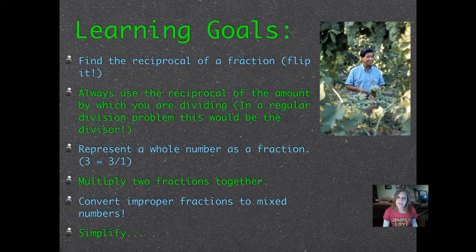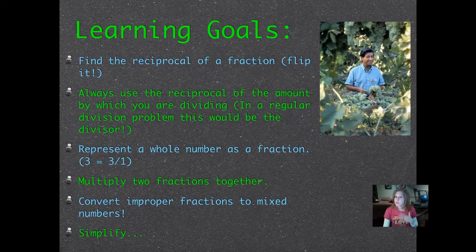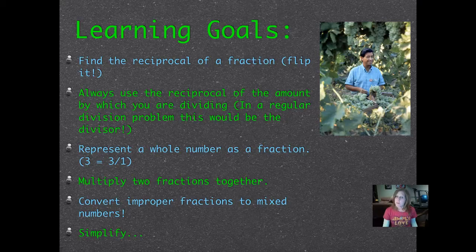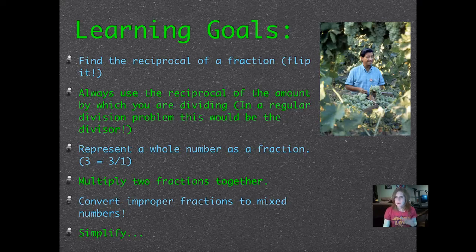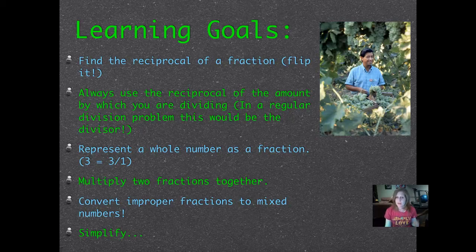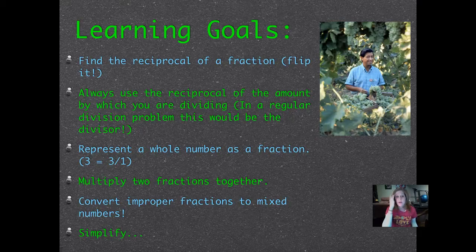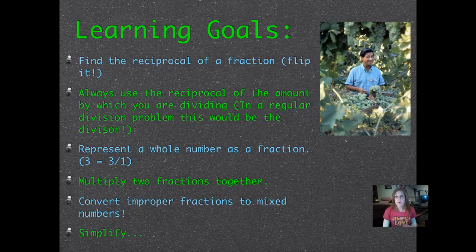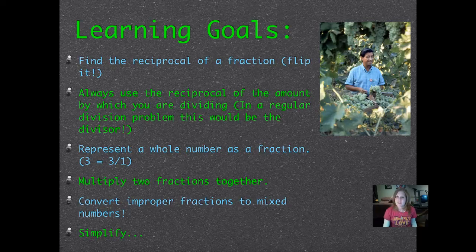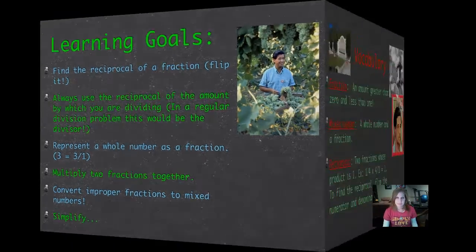Here are our individual lesson learning goals. First of all, find the reciprocal of a fraction, that's when you flip it, flip the numerator and denominator. Always use the reciprocal of the amount by which you are dividing. If we were doing a regular division problem, this would be the divisor, the number going into the amount or the amount that you're dividing it into. Represent a whole number as a fraction. Remember the whole number three can be represented by three over one. Multiply two fractions together and convert improper fractions to mixed numbers. That's important. And then simplify.